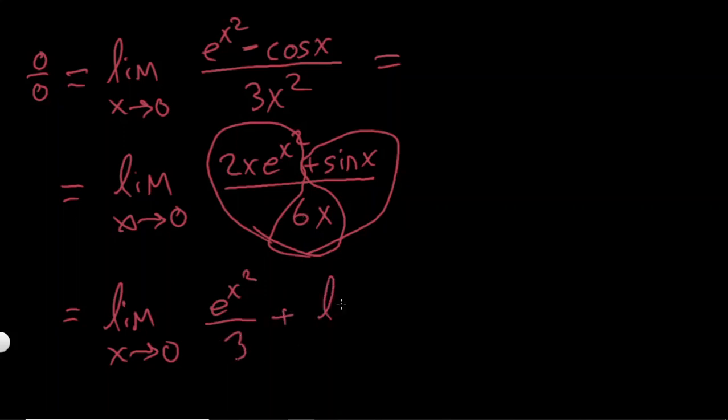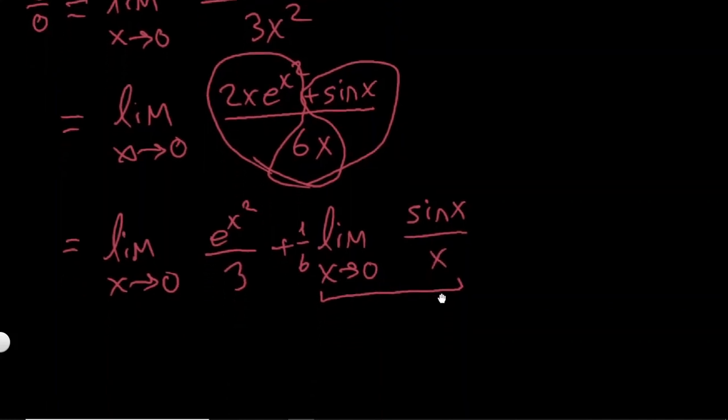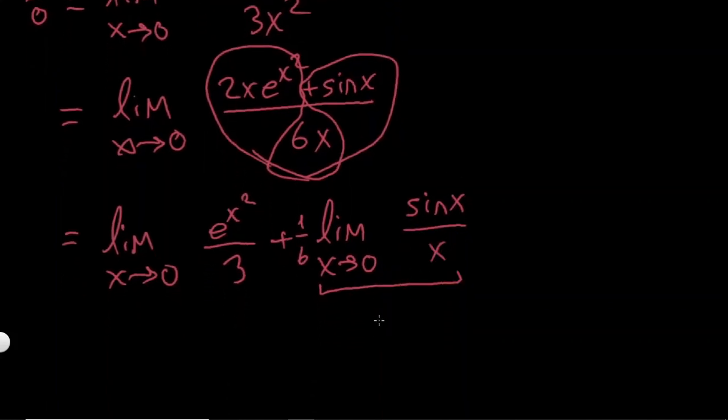And if I write the second limit, limit as x goes to 0, it's going to be sin x over 6x. And let's take this 1 over 6 before, because this is a famous limit, sin x over x, this is going to be 1. Every engineer knows this, sin x is actually equal to x. So this is 1, and if I put x is equal to 0, it's going to be 1 over 3. So my limit is equal to 1 over 3 plus, and this is going to be 1 over 6, which is equal to 1 over 2. And this is our answer.